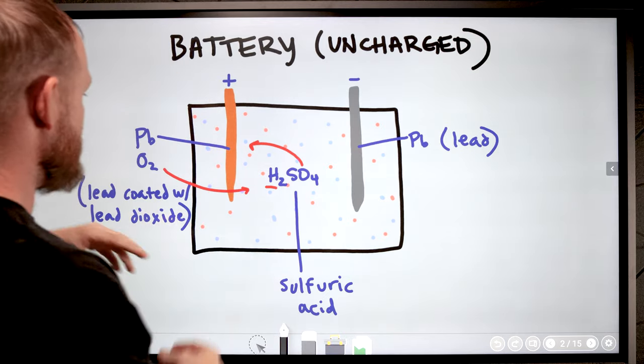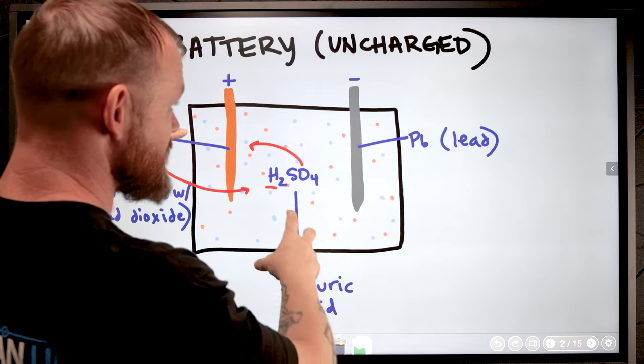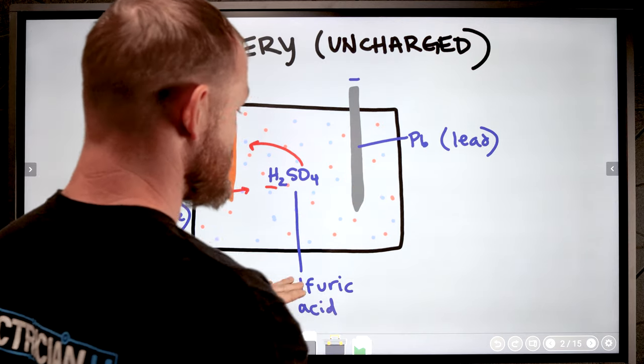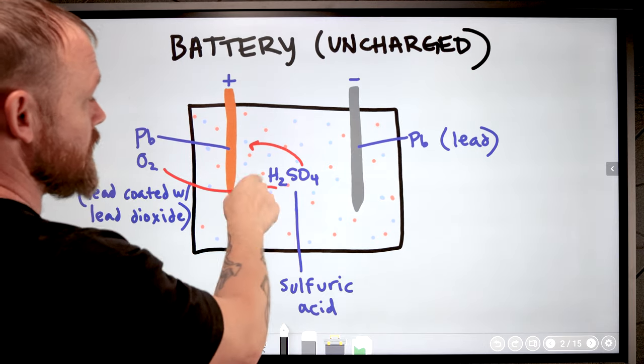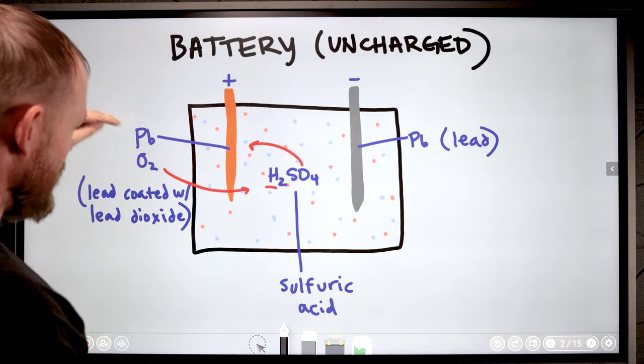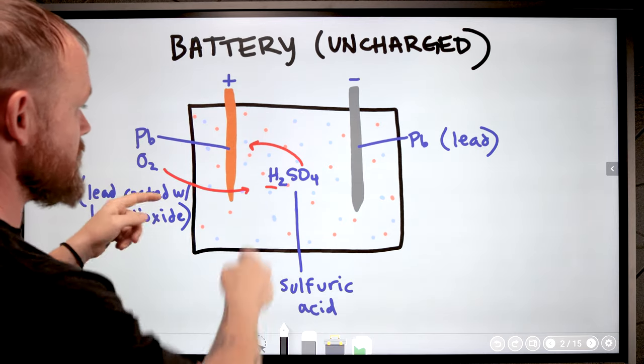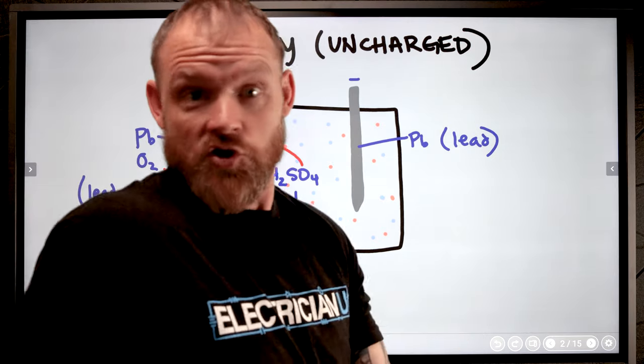What happens is this PbO2 and the sulfuric acid mix together and the Pb and the sulfuric acid mix together, and we move our SO4 over but the dihydrogen stays in the middle. We lose an O2 over here, so we end up with H2O2, which is just two H2Os.